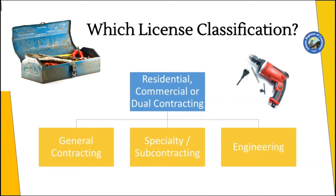If you're still not sure what classification to apply for, we have a scope determination request form that's available on our website. You can email or mail that in to us, and our scope committee will review your request and come back with one, sometimes two recommendations for which license would fit your scope of work. We try to get these processed within two to three days of receiving them.